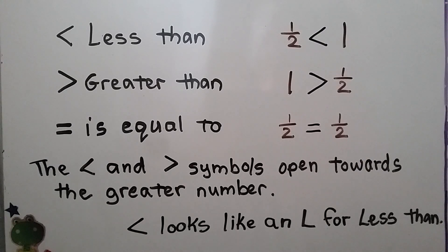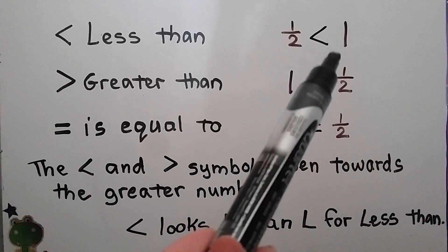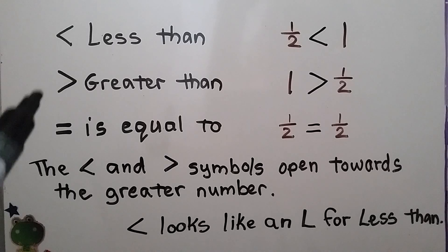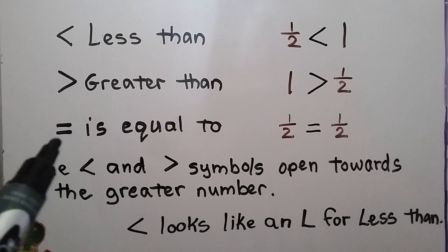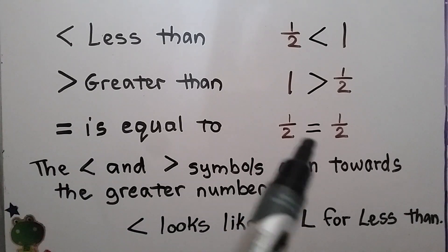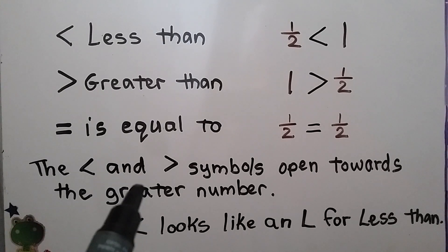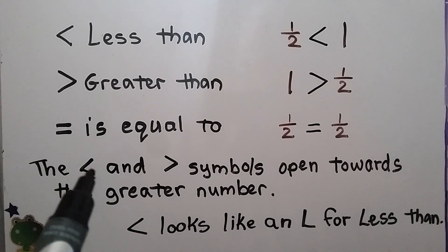This is the less than sign right here. A half of something is less than a whole thing, so we have a less than sign there. This is the greater than sign — one is greater than half. And, of course, you know the equal to sign. A half is equal to a half. The less than and greater than symbols open towards the greater number, so whichever is the greater number, that's the side that's open more.